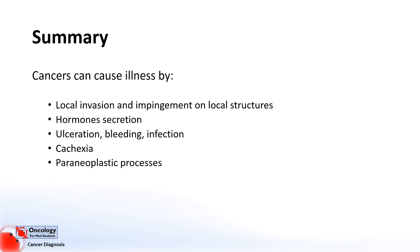To summarise, cancers can cause illness by local invasion or impingement on local structures, hormone secretion, ulceration, bleeding, infection, cachexia, and paraneoplastic processes. Thanks for listening — if you found the video useful please click the subscribe button and check out the other videos on the channel. Thank you!